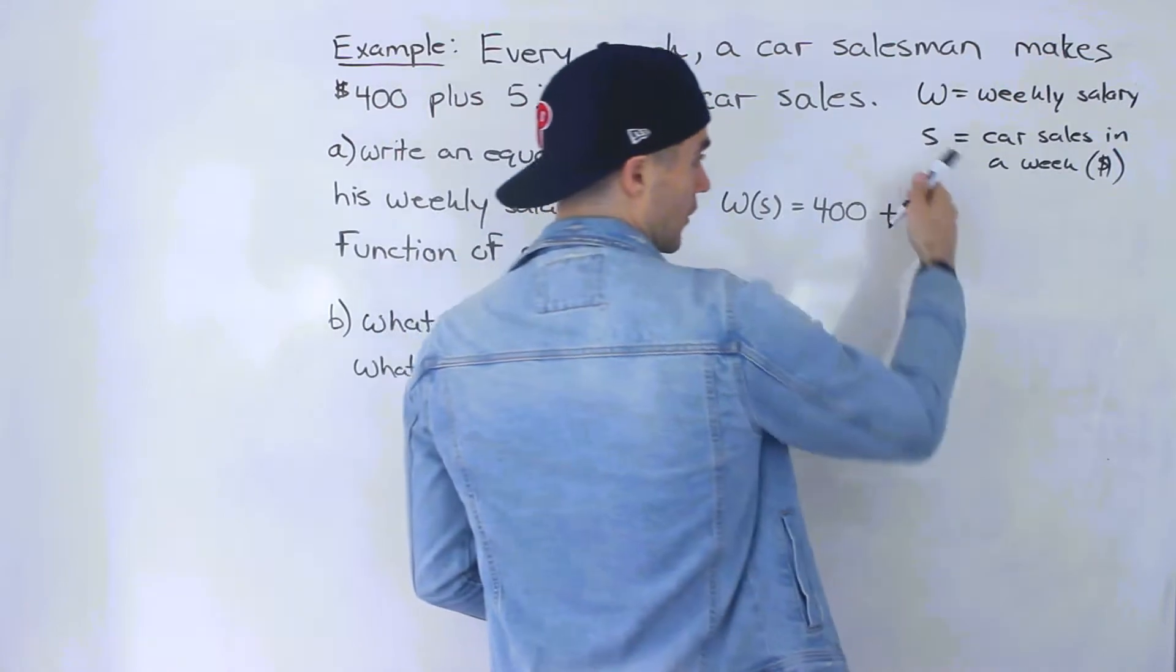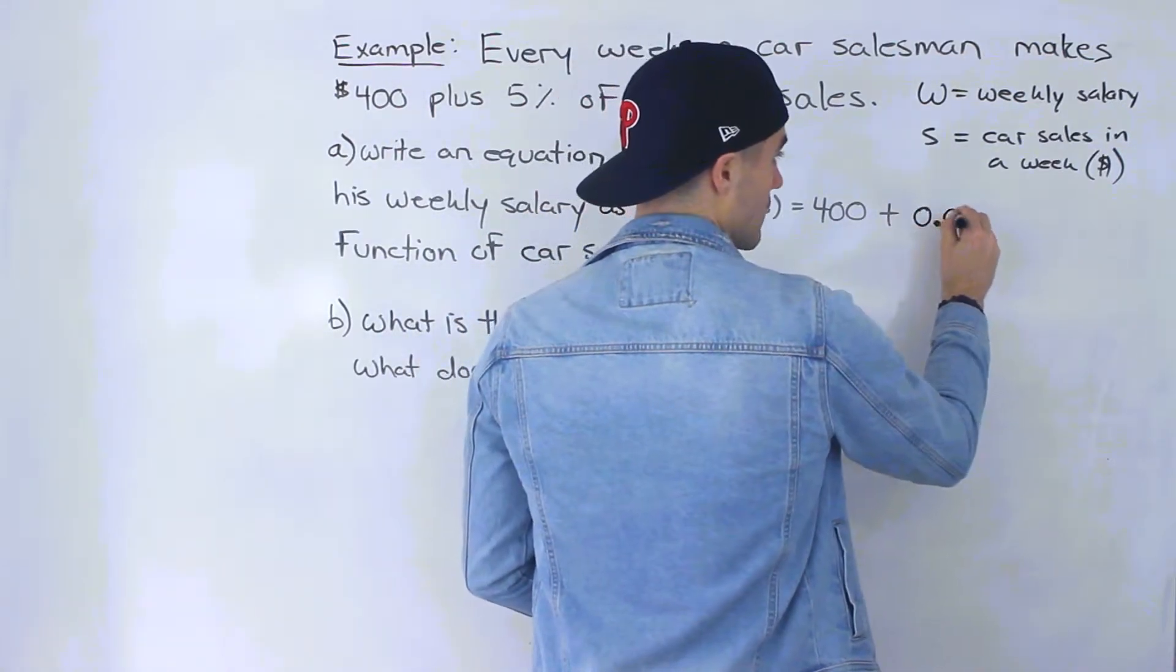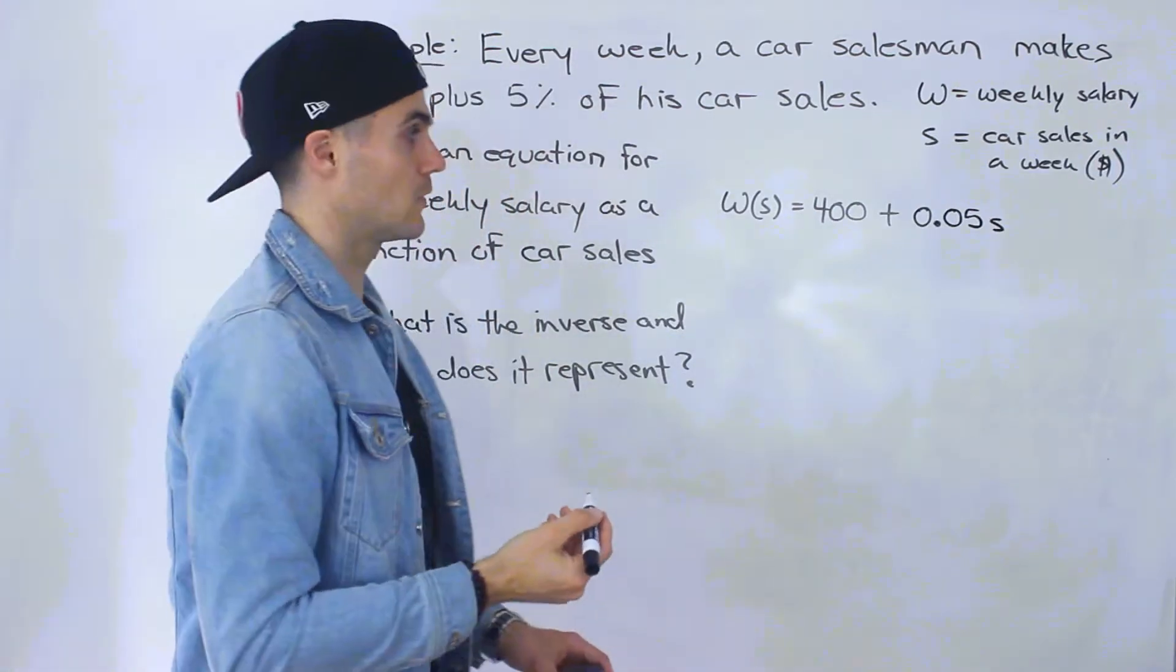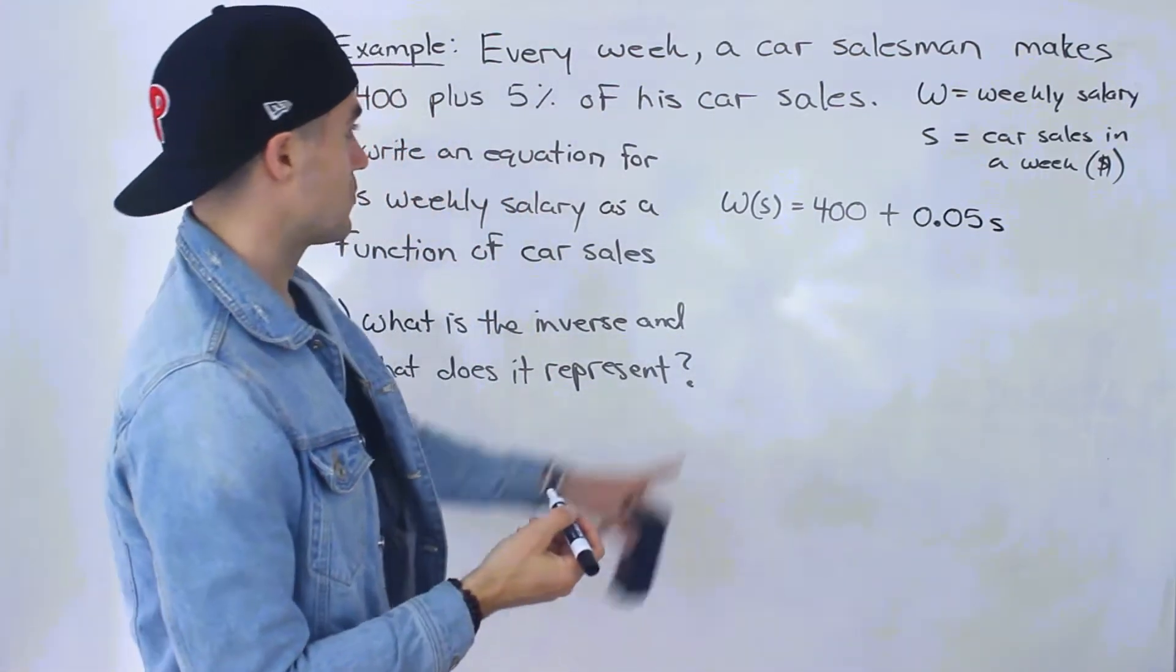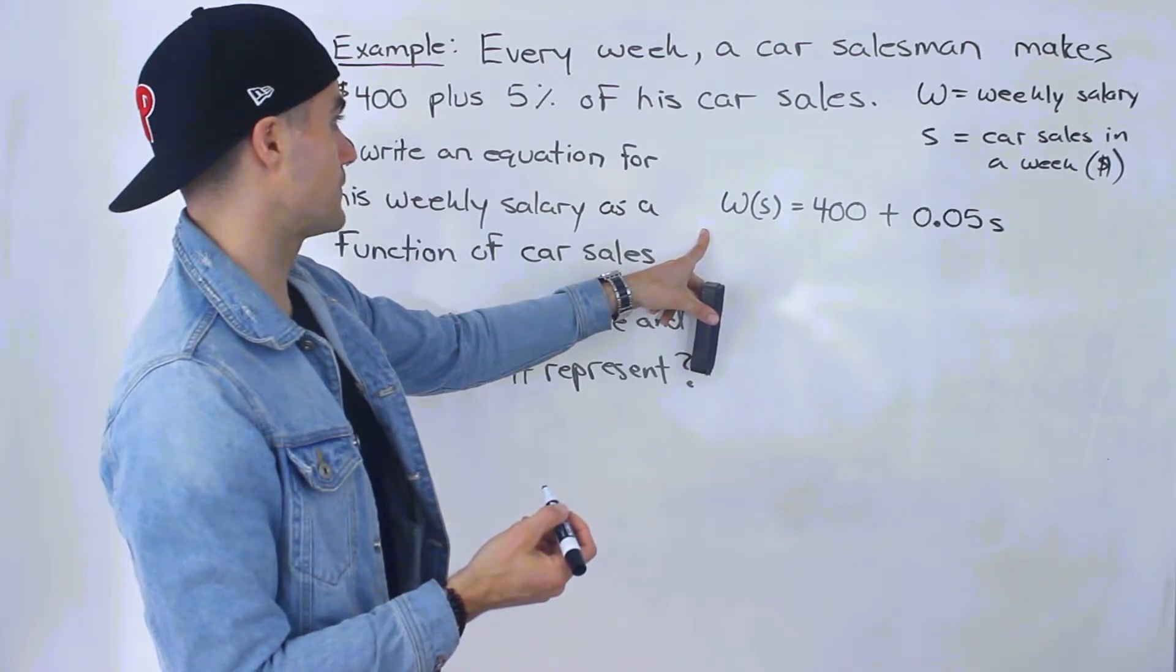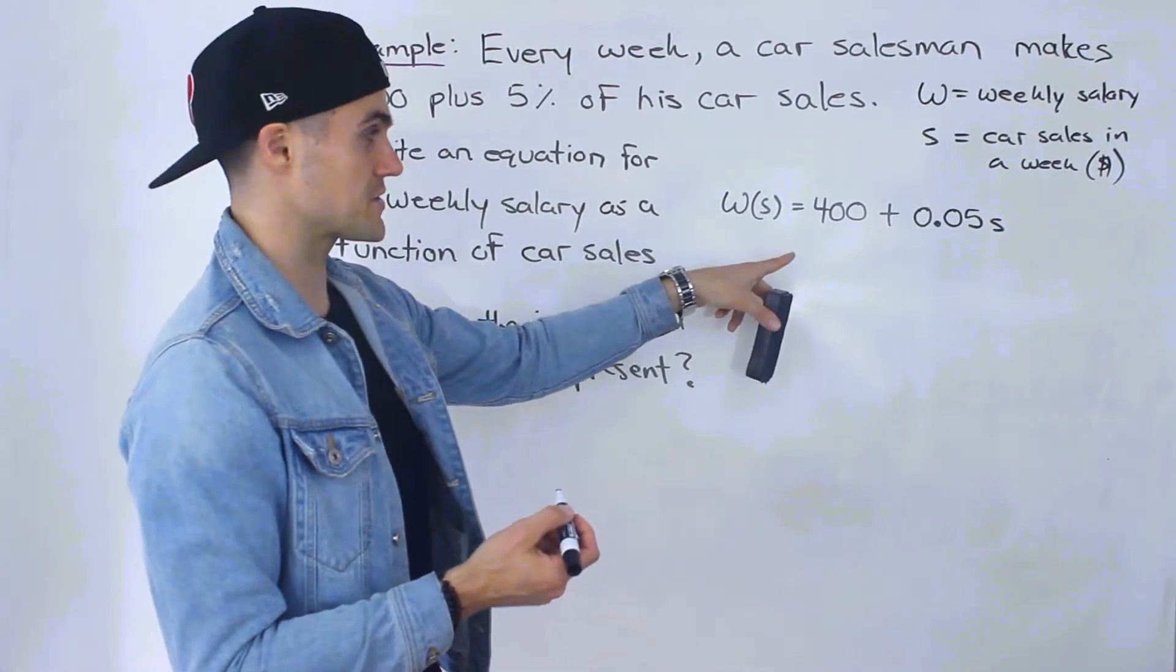It would be $400 plus he receives 5% of the car sales. So 5% of the car sales would be 0.05 times that S value, whatever it is. So that is the equation for the weekly salary in terms of the car sales.